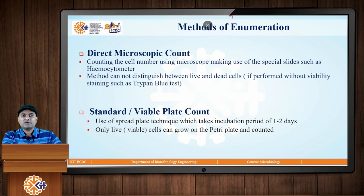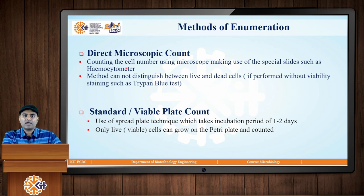Now let us see what are the methods of enumeration of bacteria. There are principally two methods. The first is direct microscopic count, where special slides such as a hemocytometer are used and direct counting of cells is done under a microscope. The concentration is reported as cells per unit volume. This method cannot distinguish between live and dead cells unless we perform a viability staining technique such as the trypan blue test.